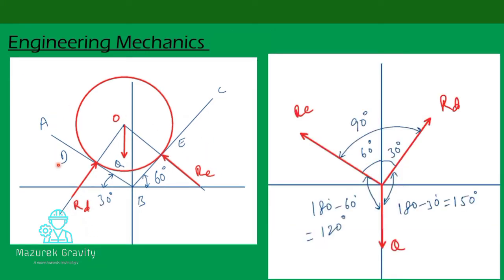Now let us draw the forces and reactions on the XY plane. The weight Q is acting downwards. Rd is depicted here — the angle between the vertical and Rd is 30 degrees. Similarly, this angle is 60°, making the angle between Re and the vertical 60 degrees. Re is drawn towards this direction.